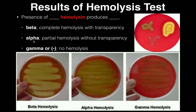The second kind is alpha hemolysis — this is only partial hemolysis, and we do not have transparency. You will still have some clearing around the streak of bacteria, but you will not be able to see through clearly to the other side. The red blood cells have been degraded, but you really won't be able to see through the other side of the plate well. It's almost like looking through a stained glass window, whereas in beta, it's like looking through a regular window in your house.